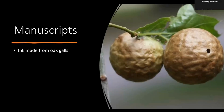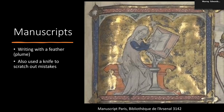What would you write with if you were writing a medieval book? You'd make ink from oak galls. On oak trees you might have noticed these strange little things — sometimes called oak apples — made by parasitic wasps. If you grind them up and add water they make excellent ink, so good that hundreds of years later the writing done in this ink is still very clear and legible.